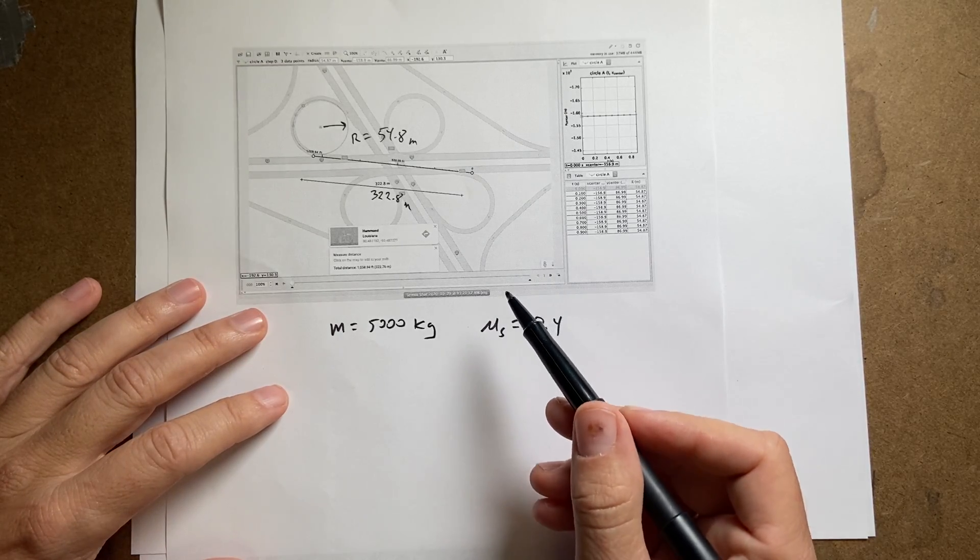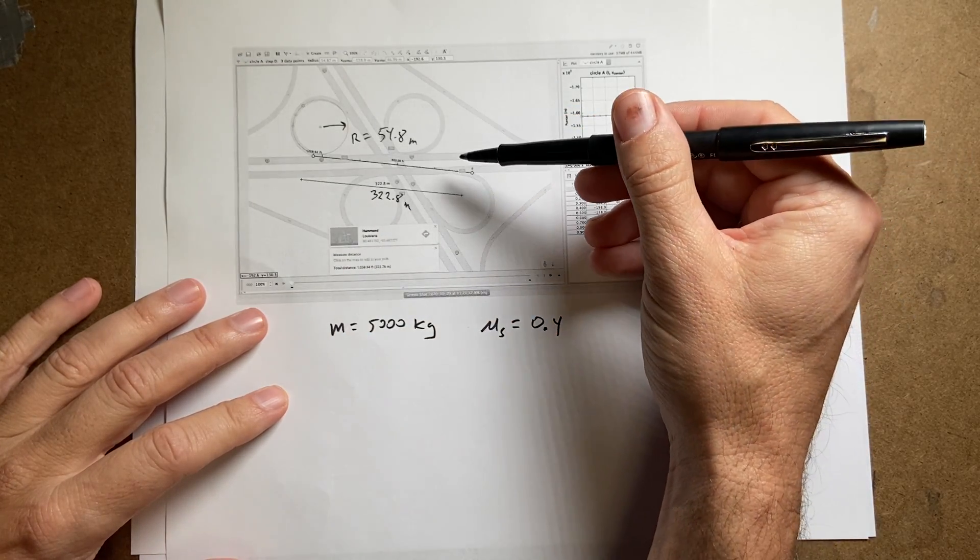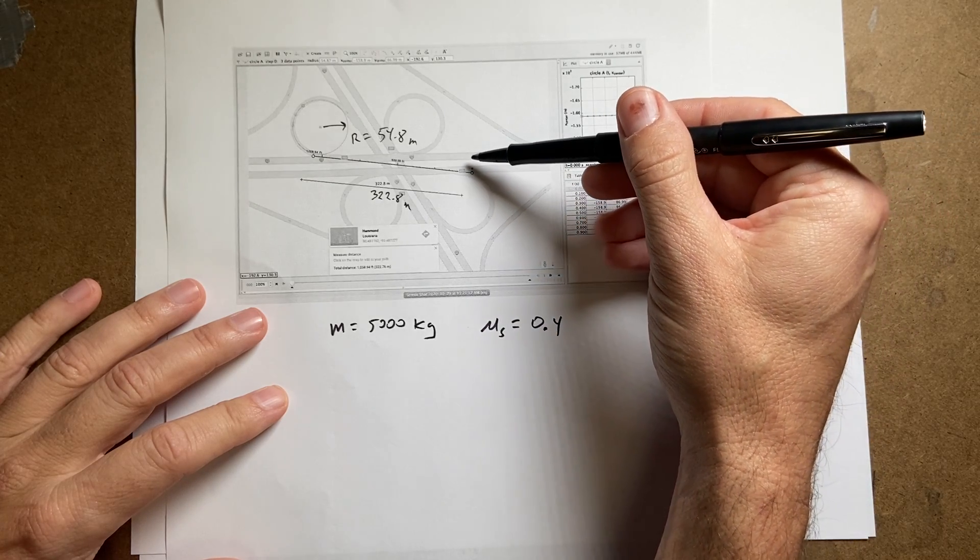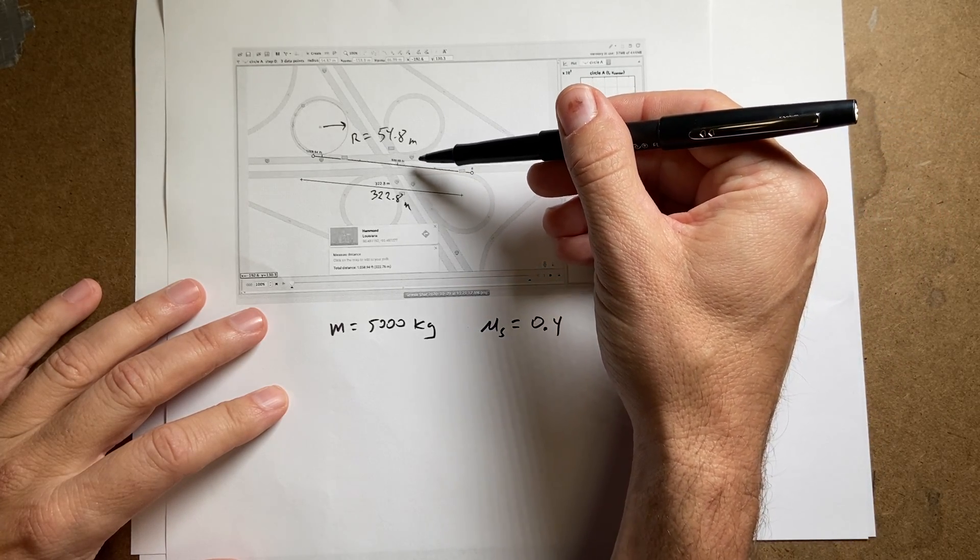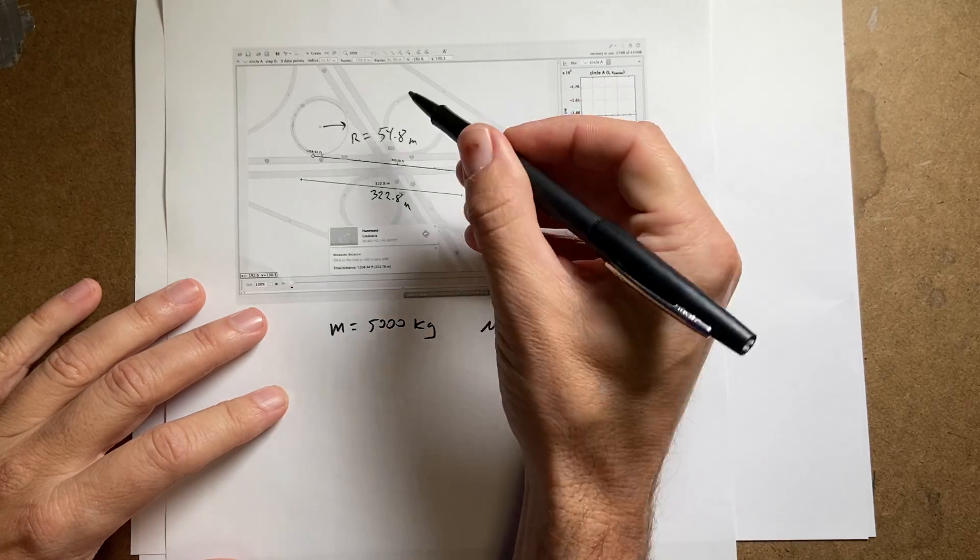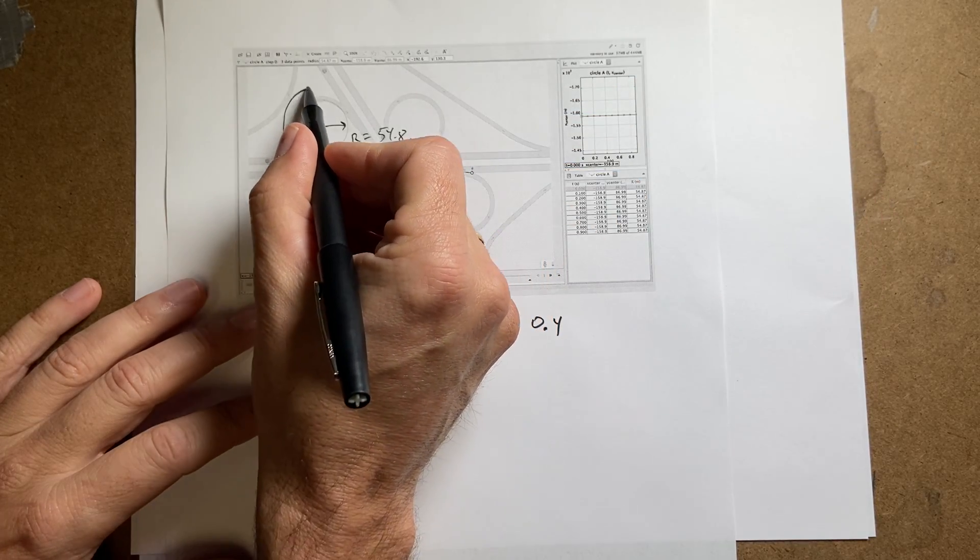So the question is, suppose you're coming this way on I-12 west and you want to go to I-55 south, so you're going to go like that.